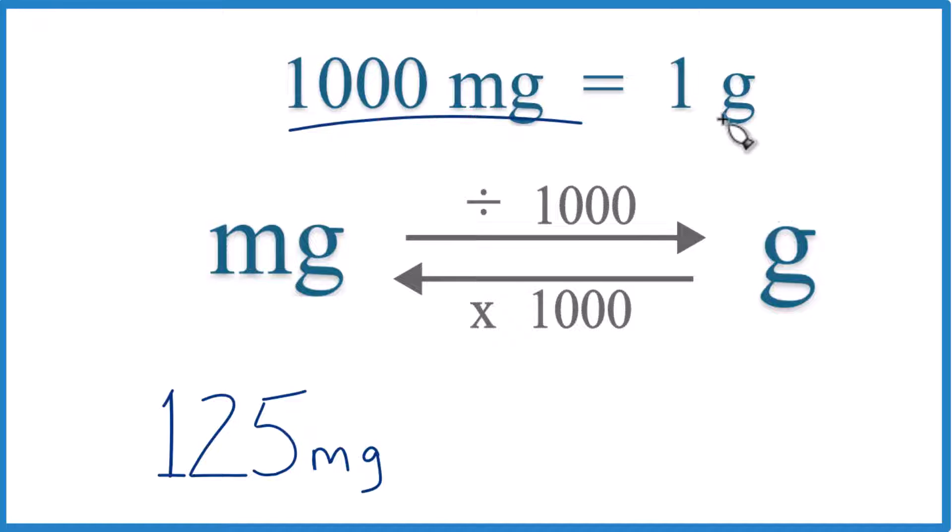You need to know that there are 1,000 milligrams in 1 gram. You could say 1 gram equals 1,000 milligrams. That's our conversion factor. We need that when we go from milligrams to grams or grams to milligrams.